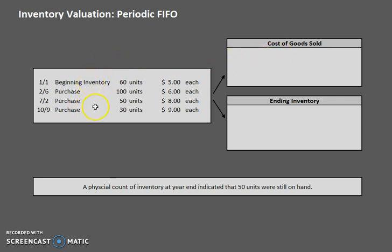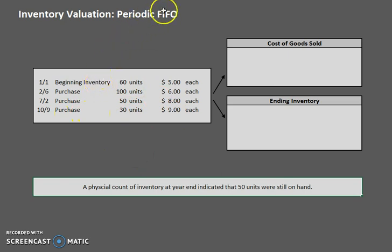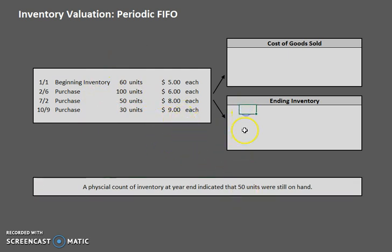So let's start analyzing this data and looking at what the cost of goods sold and the cost of ending inventory will be. A physical count of the inventory indicated that 50 units were still on hand at the end of the period. Since the first ones purchased are the first ones sold, the units still on hand — the ones we did not sell — will be at the bottom of our inventory layers.